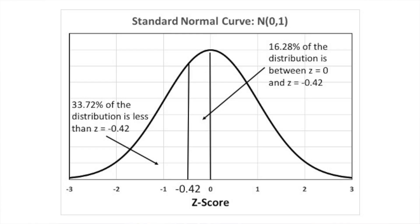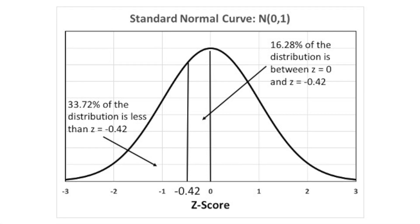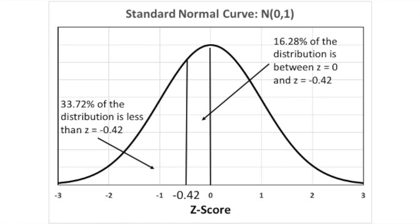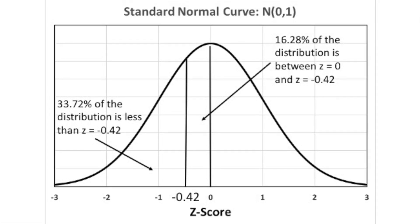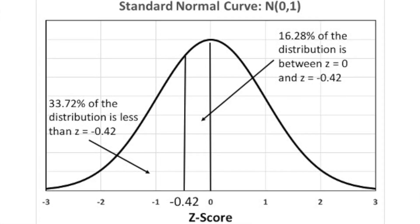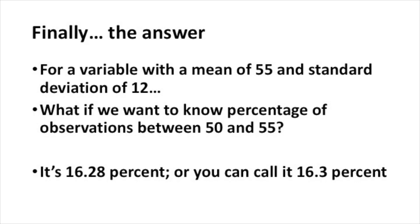Now to calculate the percentage of the distribution between 50 and 55. Recall that 55 was the mean, so 50% of the distribution is below the mean and 50% above it, because the standard normal curve is symmetric. We just learned that 33.72% of the distribution is less than the z-score of minus 0.42, which lines up with the value of 50. So 16.28% of the distribution is between a z-score of 0 and minus 0.42, corresponding to the interval between 50 and 55. So for a variable with a mean of 55 and a standard deviation of 12, 16.28% — or about 16.3% — of the observations fall between 50 and 55.